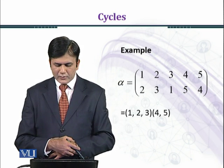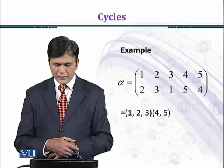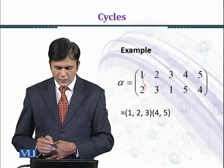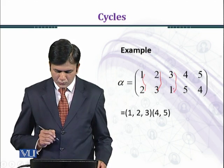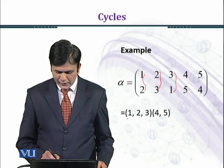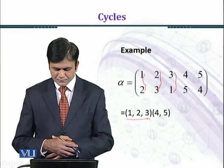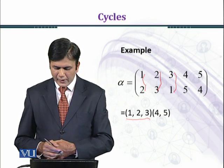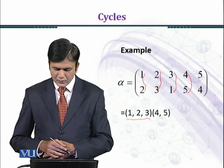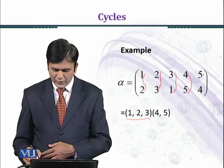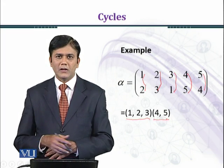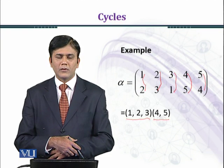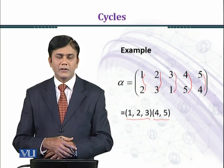When we act alpha the first time we get 1 goes to 2, the second time 2 goes to 3, and the third time 3 goes to 1. In this way we get the first cycle (1, 2, 3). When alpha acts on 4, we get 5, and acting again we get 4, giving us the second cycle (4, 5). You can see that these two cycles are disjoint — there is no common element between them.